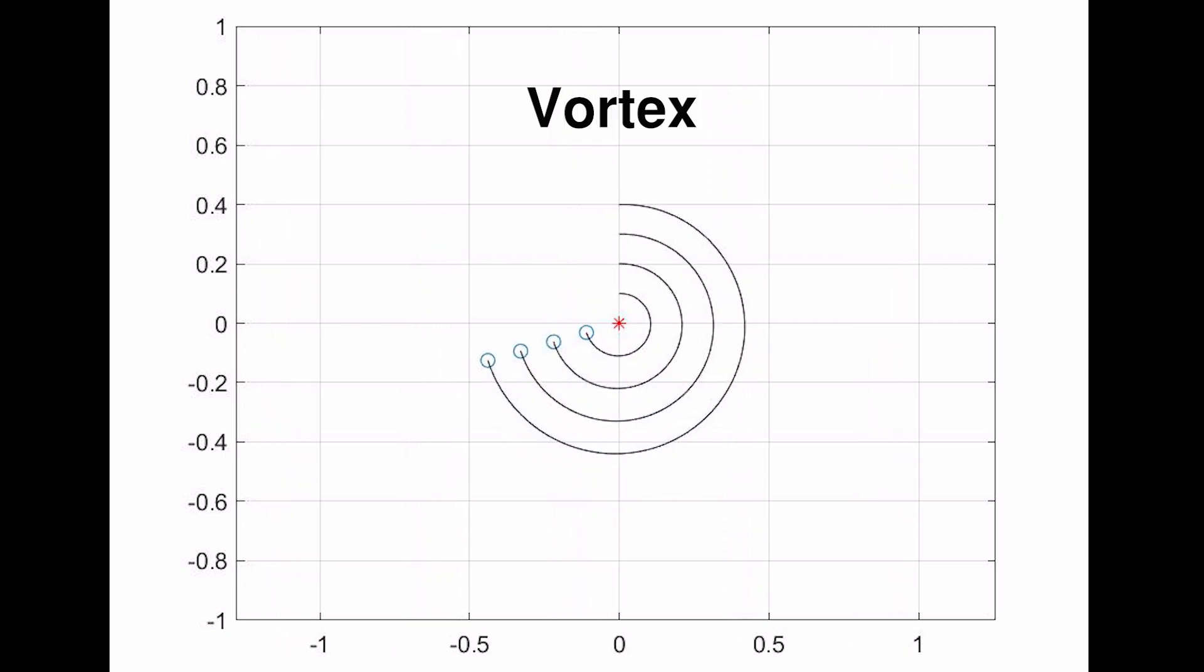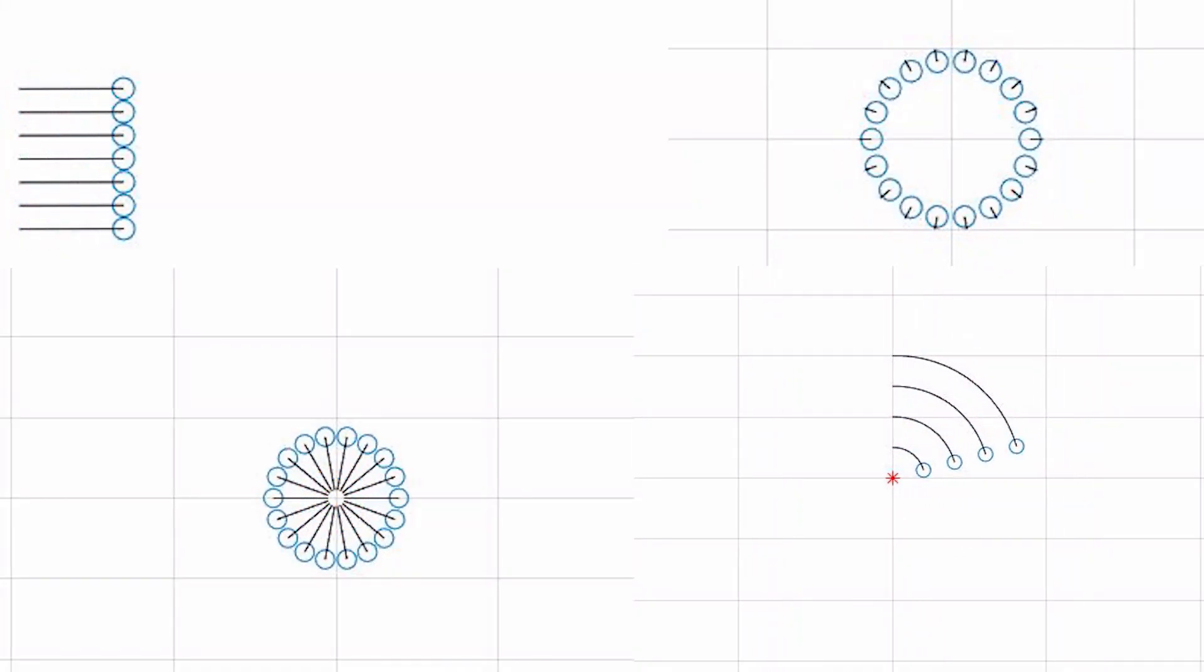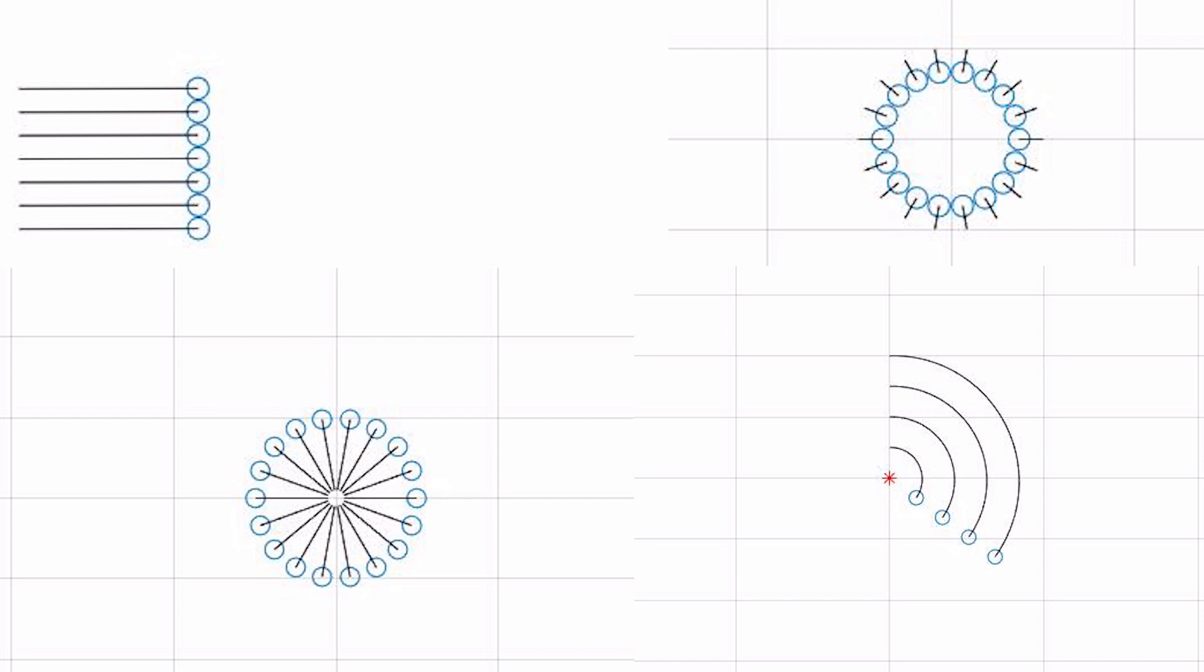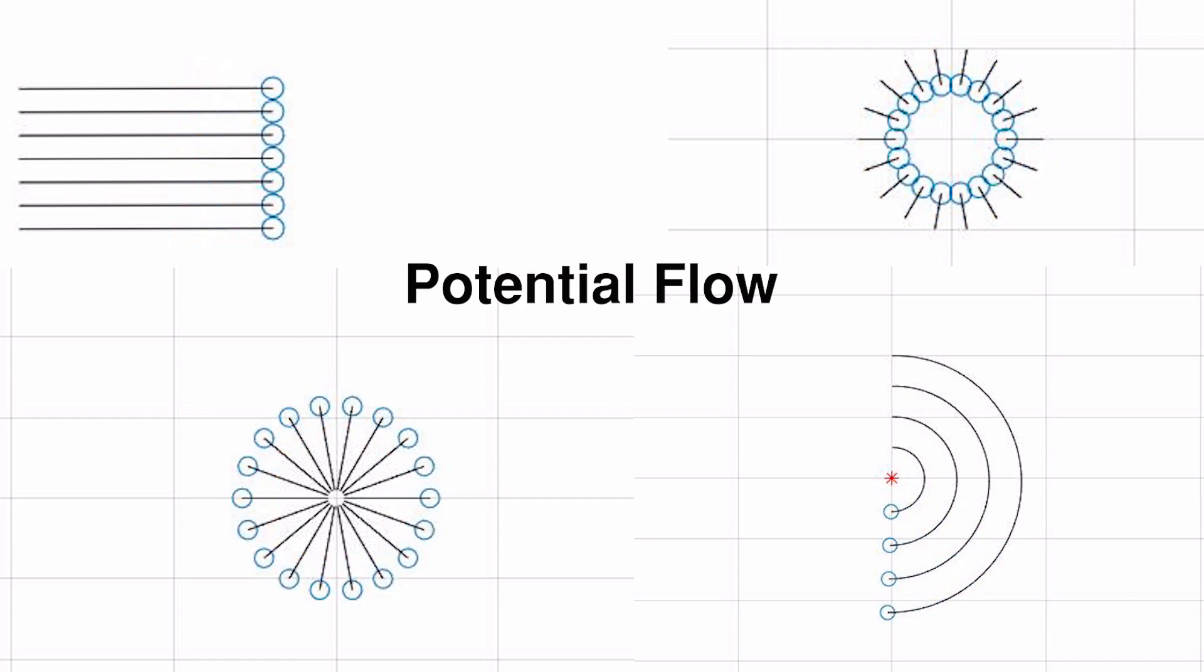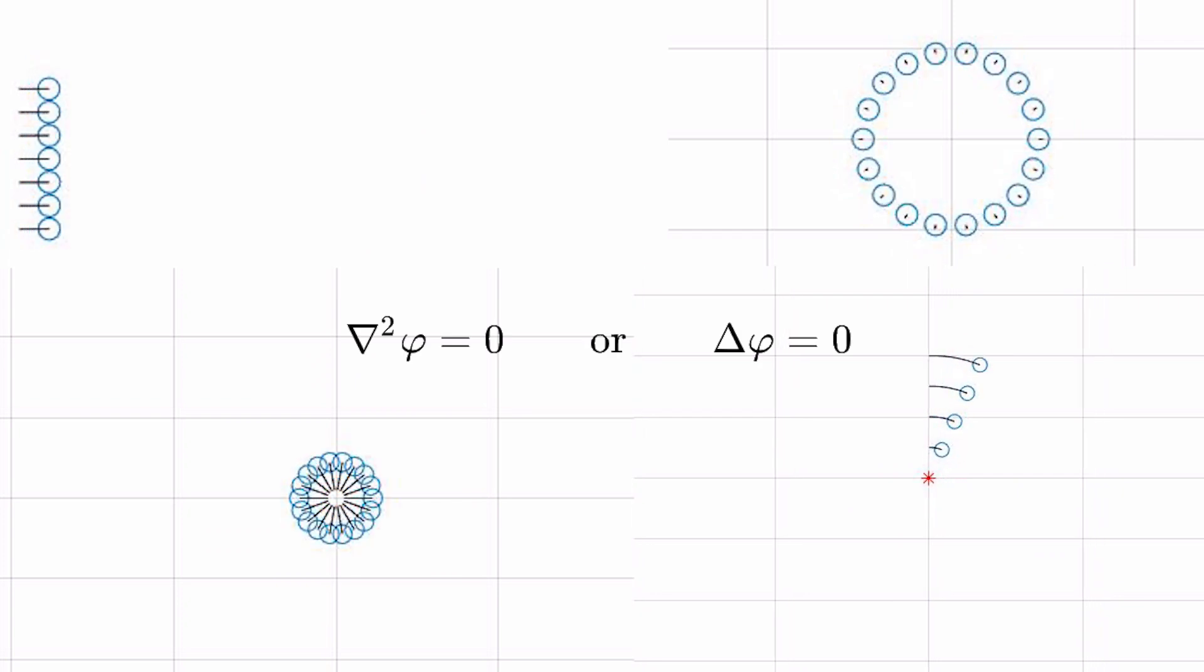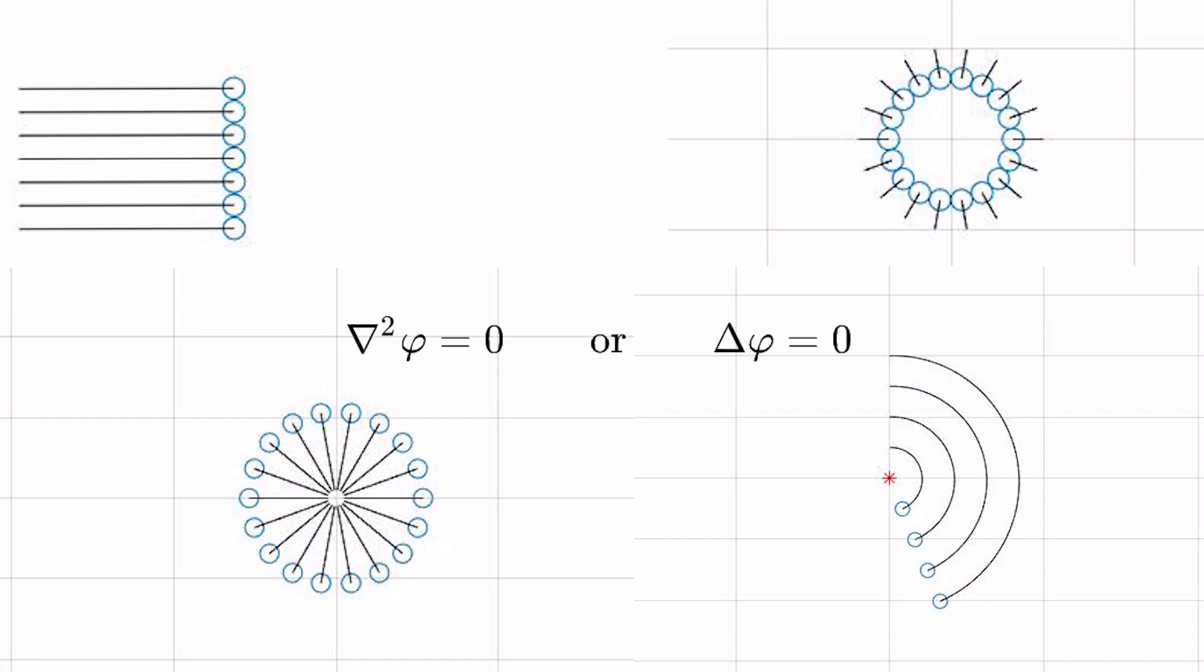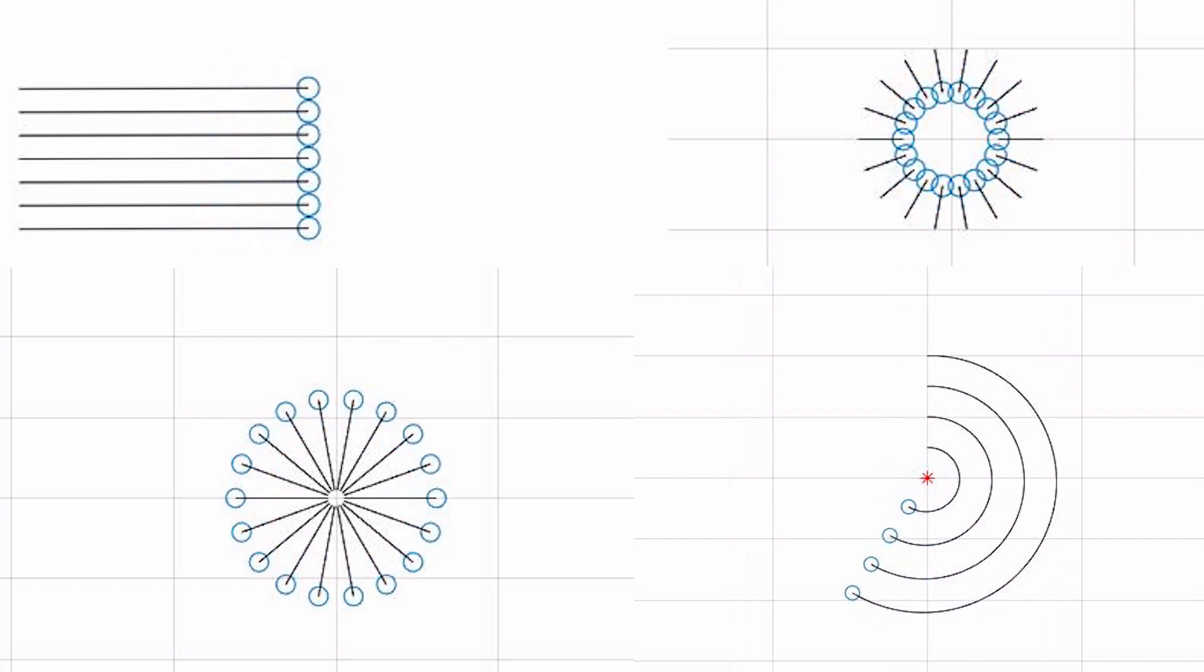All these elementary flows are part of a branch of fluid mechanics called potential flows. Mathematically, potential flows are described using the famous Laplace equation. The most powerful advantage of the Laplace equation is the ability to add solutions of the equations linearly together.